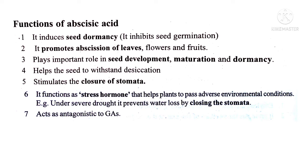ABA induces seed dormancy and inhibits seed germination. It promotes abscission of leaves, flowers, and fruits. It plays an important role in seed development, maturation, and dormancy, and helps the seed to withstand desiccation.